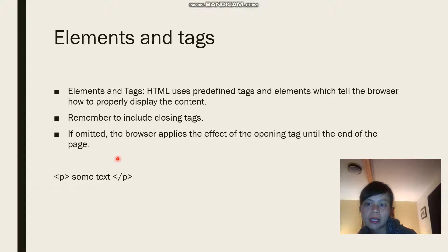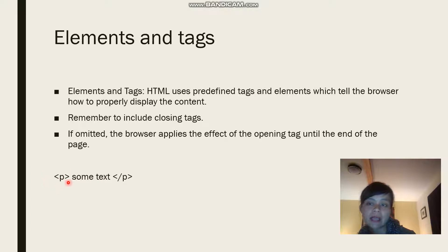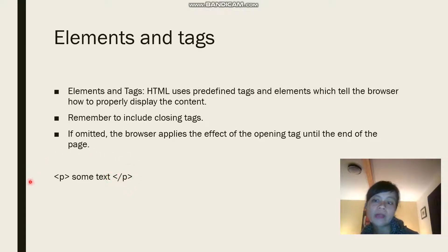Here is an example of elements and tags. This is a P tag — the angle bracket P and close angle bracket is an example of a tag, and this begins the tag. This is an end tag with a slash, showing it's the end tag. This whole thing is an element. Remember to always include closing tags.